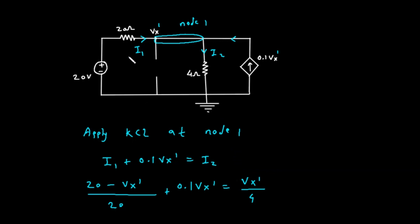Now we'll express these currents using Ohm's law. The current I1 is the voltage difference across the resistor divided by its resistance. The calculation in the image shows this as (20 minus Vx prime) all divided by 2.